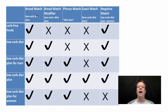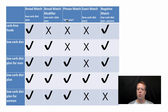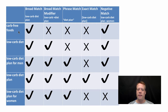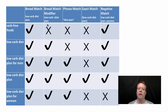Here I have the five types of matches across the top: a broad match 'low carb diet plan,' a broad match modifier 'low carb +diet plan,' a phrase match with quotes 'diet plan,' an exact match 'low carb diet plan' in brackets, and a negative match 'low carb diet plan minus women.' So 'carb free foods' will match only against the broad match and the negative match. It won't match against the exact phrase because it's not the same, it won't match against the phrase match because 'diet plan' is nowhere in it, and it won't match against the broad match modifier because 'diet' has to be in the search.